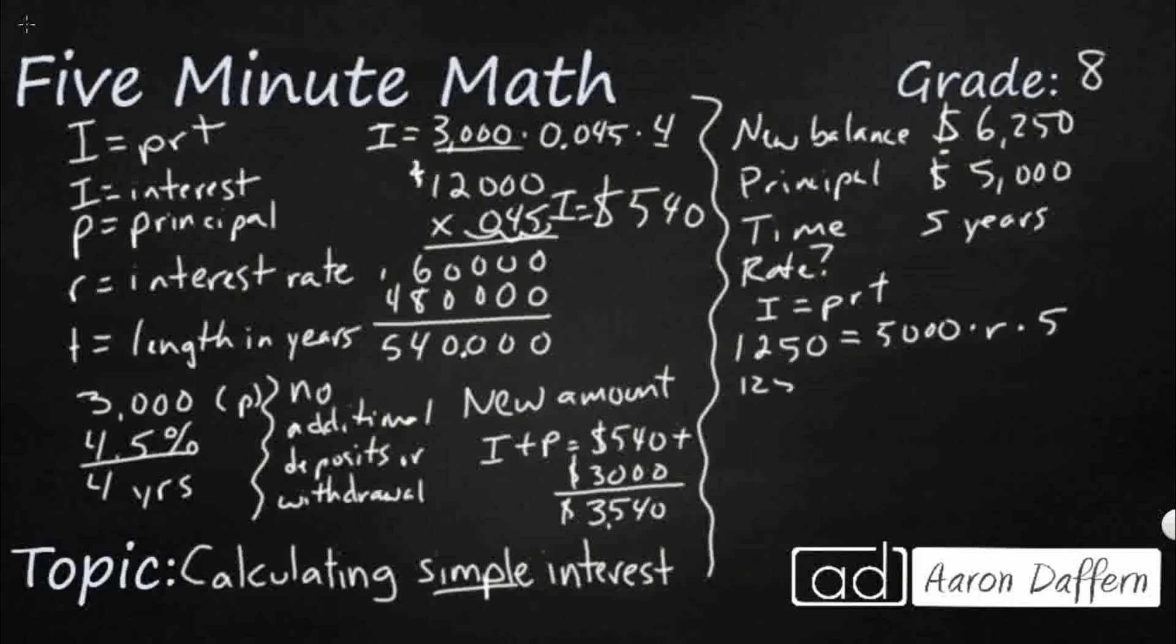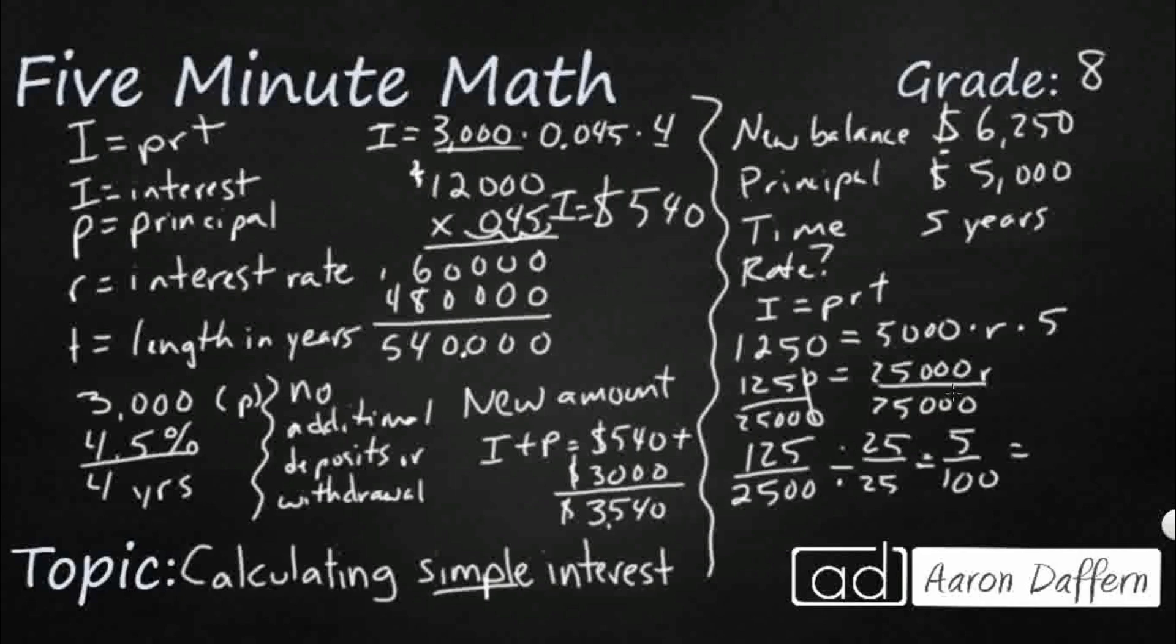So that's 1,250 equals 25,000 times R. We divide both sides by 25,000, and you get this big fraction. If you simplify by 25, you get 5 over 100, or your interest rate of 0.05.